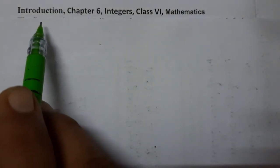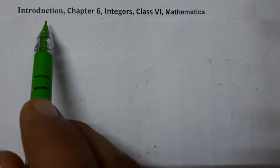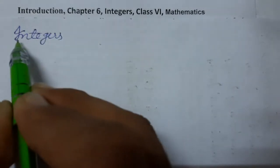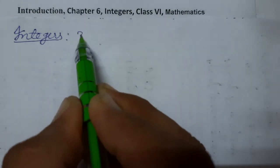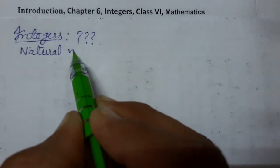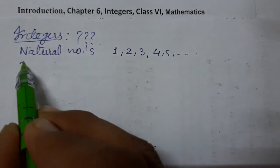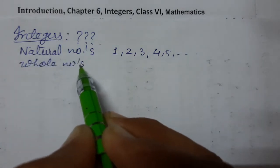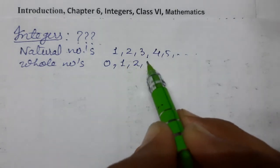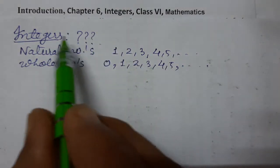Hello students, today we are going to start a new chapter — Chapter 6: Integers, Class 6 Mathematics. So what are integers? You have already studied many types of numbers. You have studied natural numbers, which start from 1, 2, 3, 4, and so on. Then you studied whole numbers — numbers which include zero along with the natural numbers. Now we come to integers.